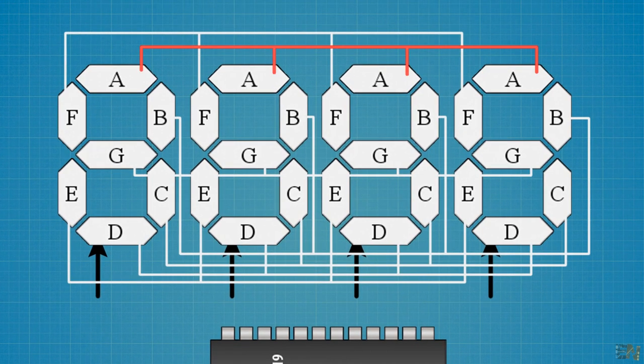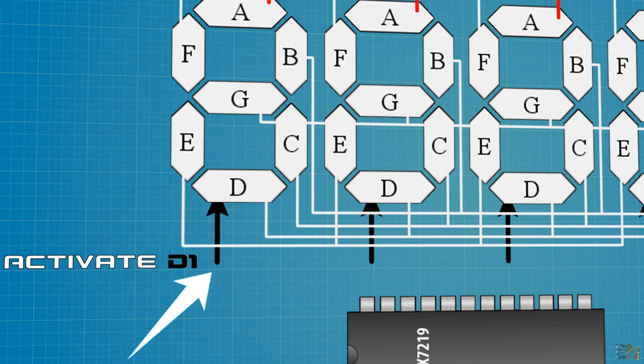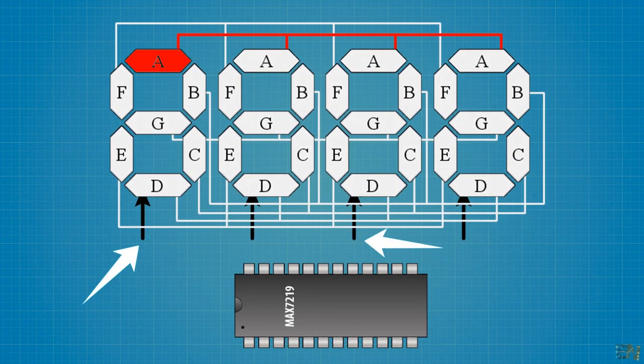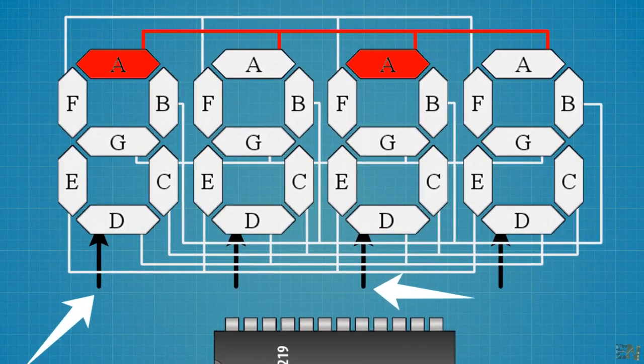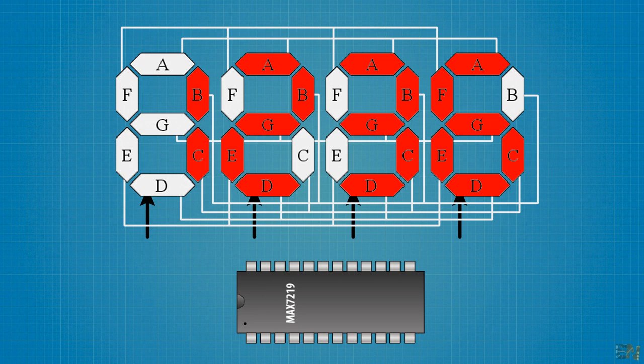In this way if the driver activates the A segments but only activates the ground pin of the first display, only this segment will be turned on. But if I activate the ground pin of both the first and the third display, it will turn on the A segment of both displays. The driver will do this very fast so our eyes won't see the change, so that's why we need an LED driver.